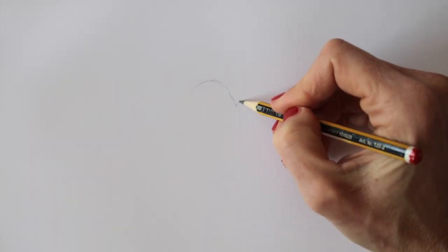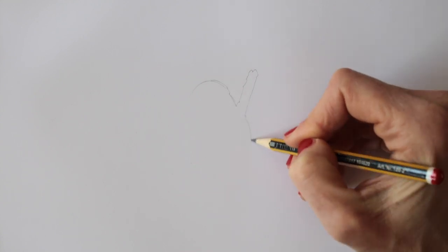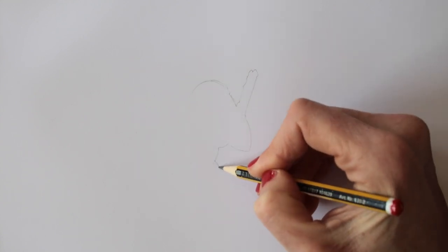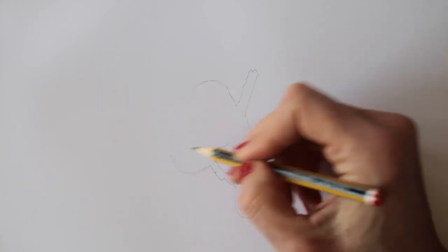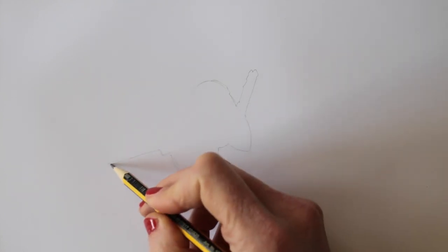I try to switch off the part of my brain that says that is a set of keys, it has plastic and there's a reflection in the metal, that kind of stuff. Instead, I will look at what I see, not at what I know.